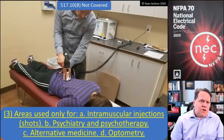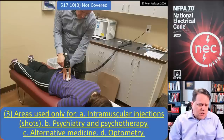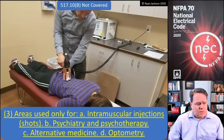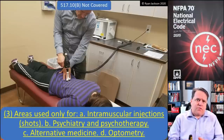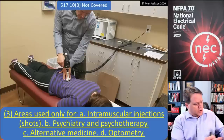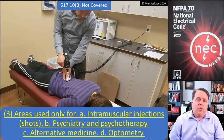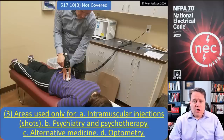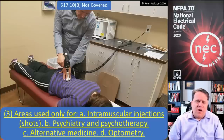Item C covers alternative medicine. You could argue that chiropractic, acupuncture, or acupressure may or may not be healthcare. This just removes the discussion — if you want to call it healthcare, fine, but this section says we don't have to follow Part Two of article 517. So a chiropractor's office would not need to be wired with any special wiring methods.